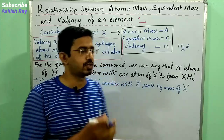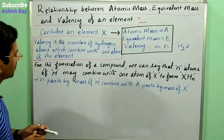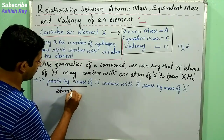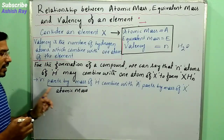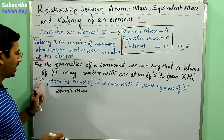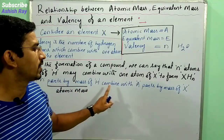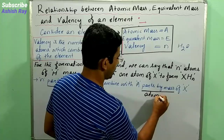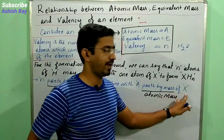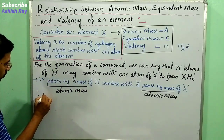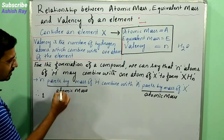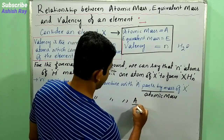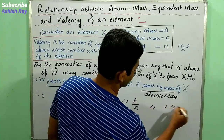That means N parts by mass — where atomic mass of hydrogen gives us N parts by mass — so N parts by mass of hydrogen combine with A parts by mass of X, where A is the atomic mass of X. If we take 1 part by mass of hydrogen, it combines with A/N parts by mass of X.